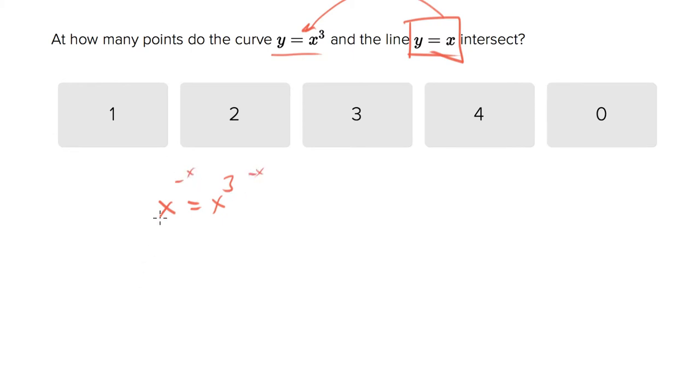You get x cubed minus x equals zero. Now we can factor out an x and you get x times (x squared minus one) equals zero. Remember, this is the test's favorite: x squared minus one equals (x plus one) times (x minus one). You need to have that super memorized, it's basically guaranteed to come up on your test. So this equals x times (x plus one) times (x minus one) equals zero.